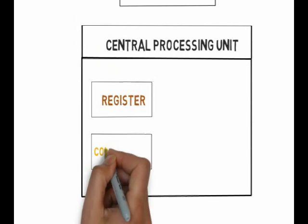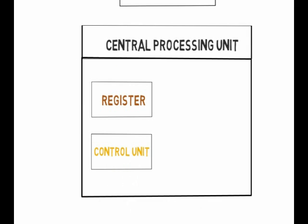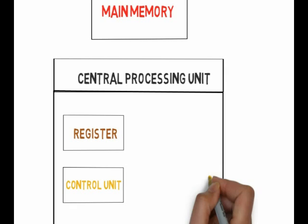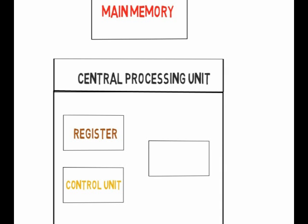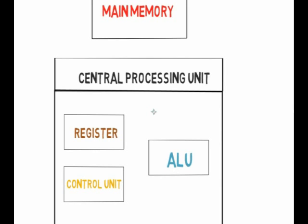The control unit makes sure that all the other parts perform their tasks correctly and at the correct time. The ALU, or arithmetic logical unit, is solely involved with carrying out calculations upon the data. All the usual add, multiply, divide, and subtract calculations will be available, but also data comparisons such as greater than, less than, and equal to.